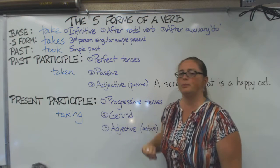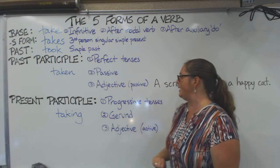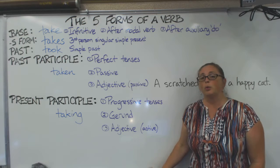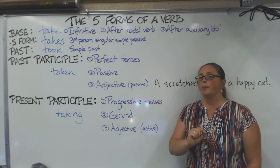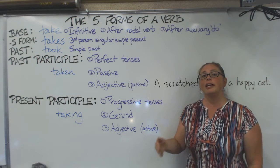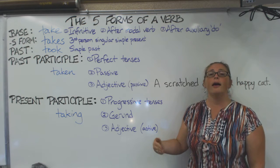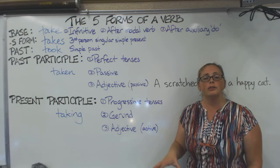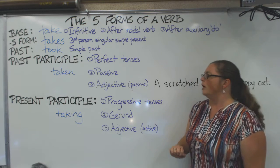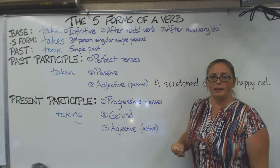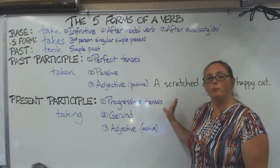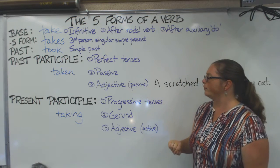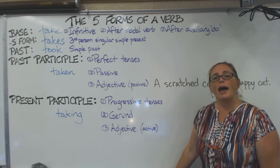Now let's look at the present participle — 'taking'. It is used in progressive tenses, which use the auxiliary verb 'be'. For example: 'She is taking the test,' meaning the action is not finished. Any progressive tense will use the auxiliary 'be' plus the present participle.